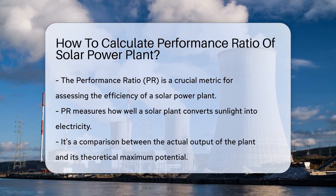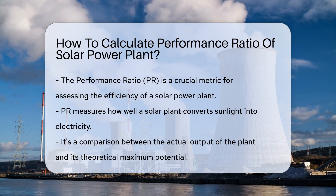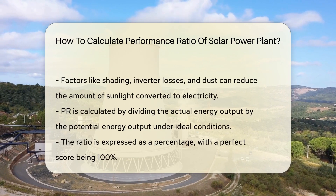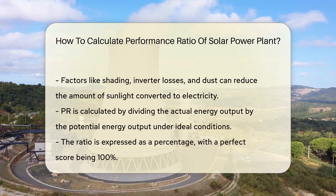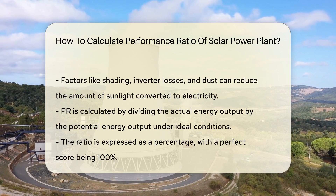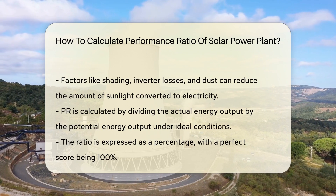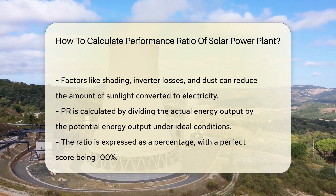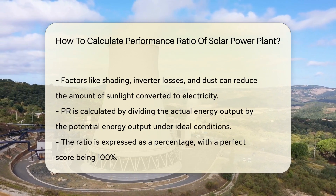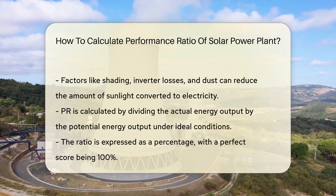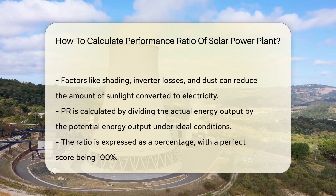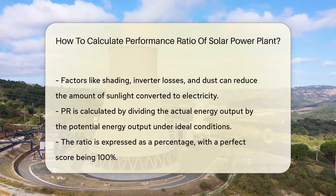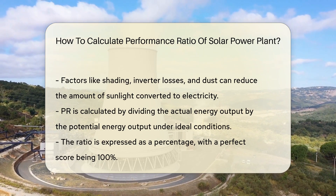Think of the solar power plant as a student. The sun is the teacher, offering lessons in the form of sunlight. The plant's job is to absorb these lessons and convert them into electricity. But not all sunlight turns into electricity — some is lost due to shading, inverter losses, or dust on the panels.